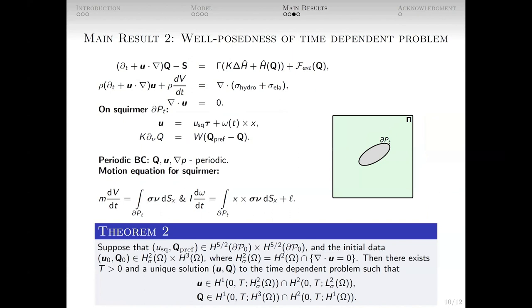Our second main result concerns the time-dependent problem. We showed that under certain regularity conditions on initial values U and Q, as well as conditions on U sub squirmer and Q preferred, strong solutions exist and have the indicated regularity.